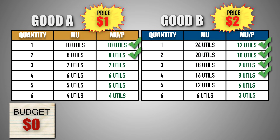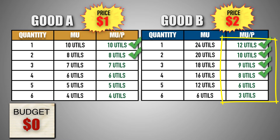Notice a couple of things. First, the consumer spent their entire budgeted income on good A and good B. Second, the consumer purchased more units of good B because the marginal utility per dollar for each unit of good B is greater than the marginal utility per dollar for each unit of good A.